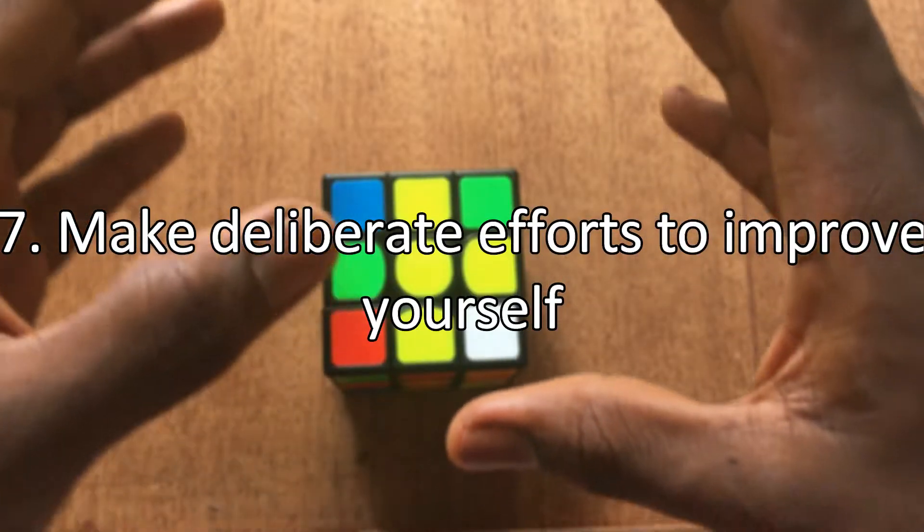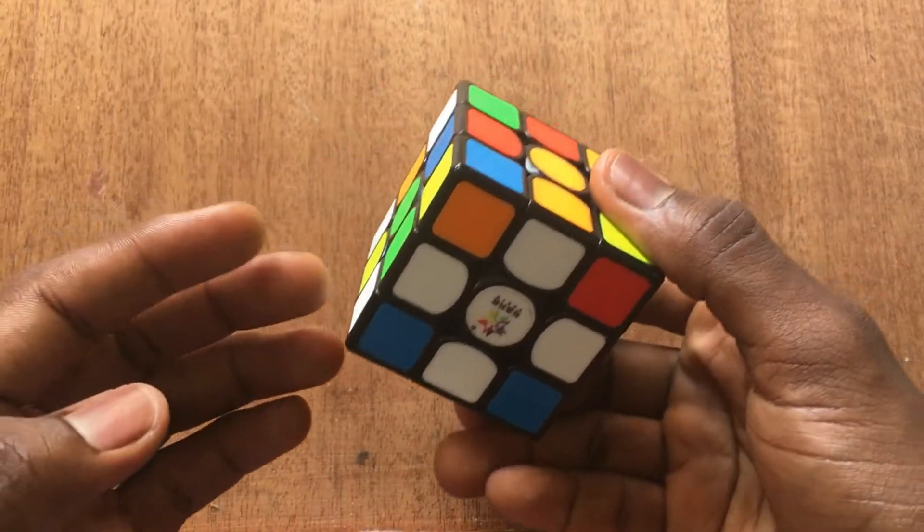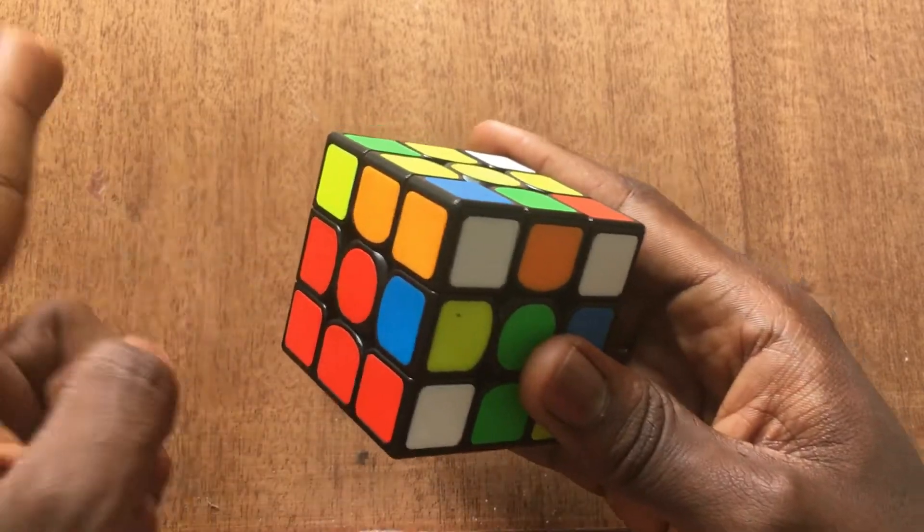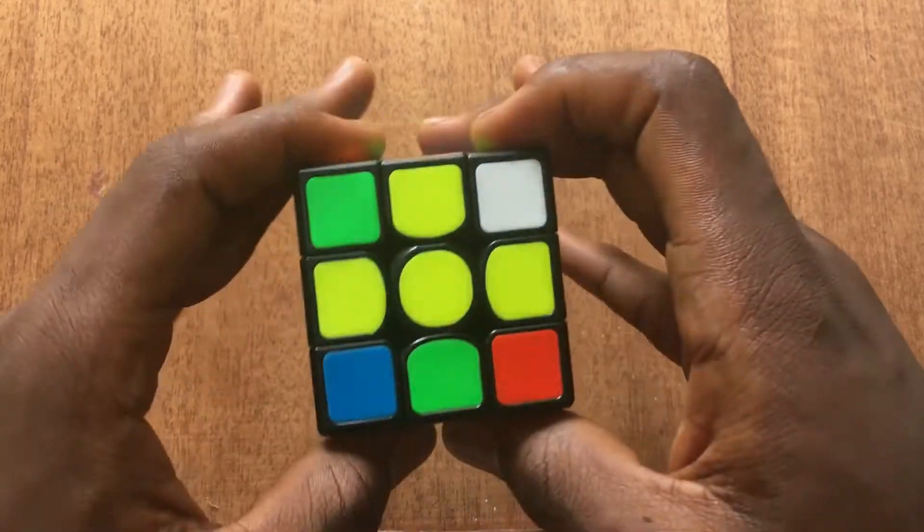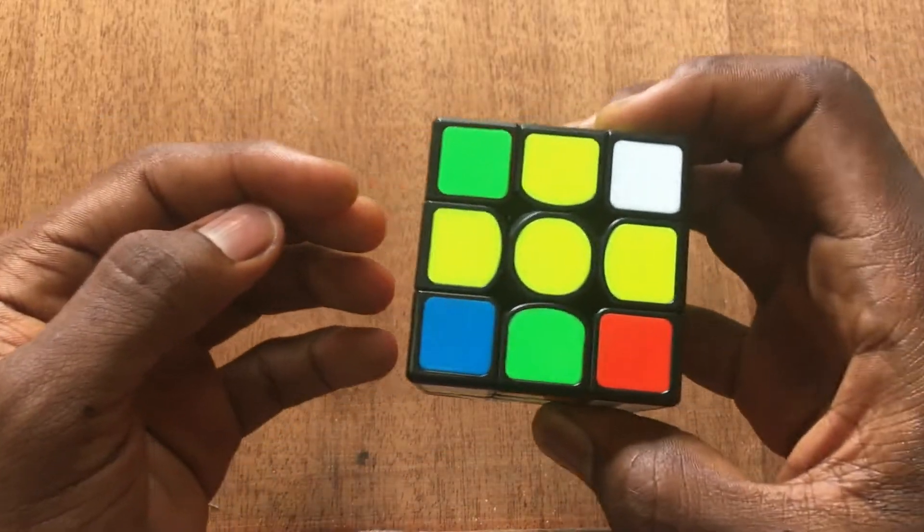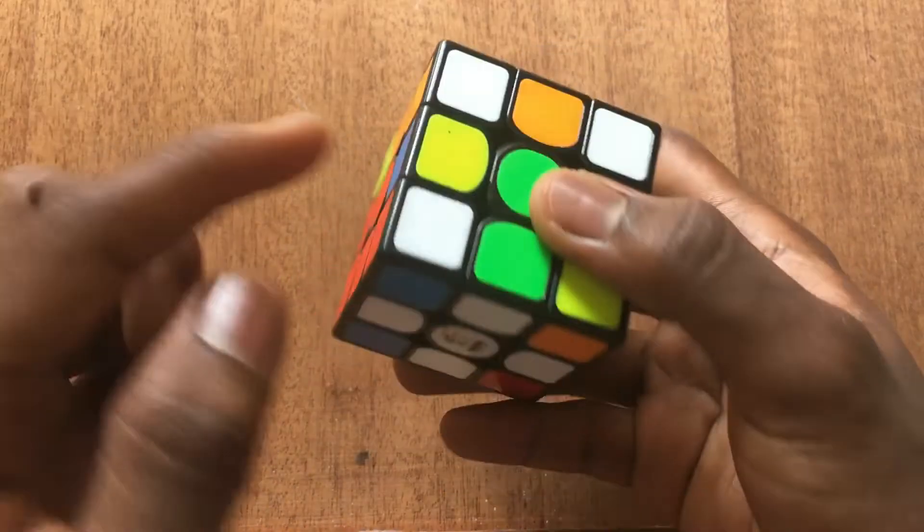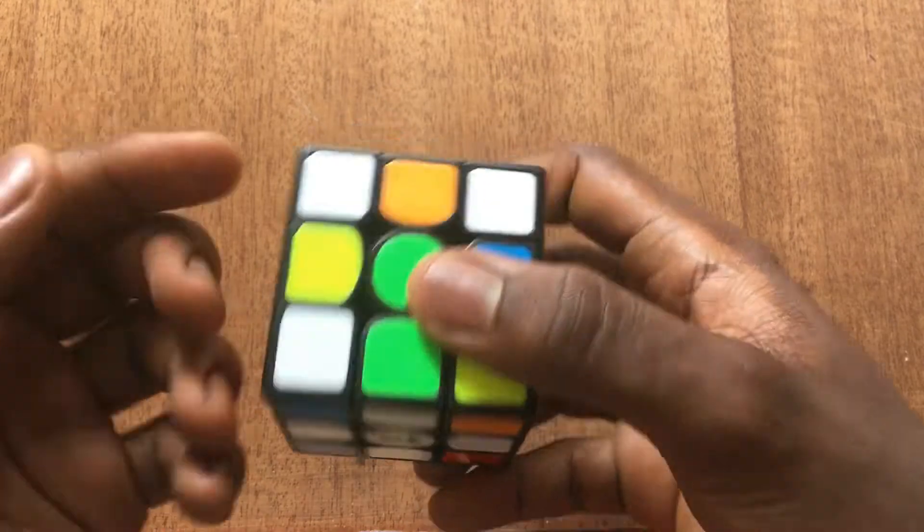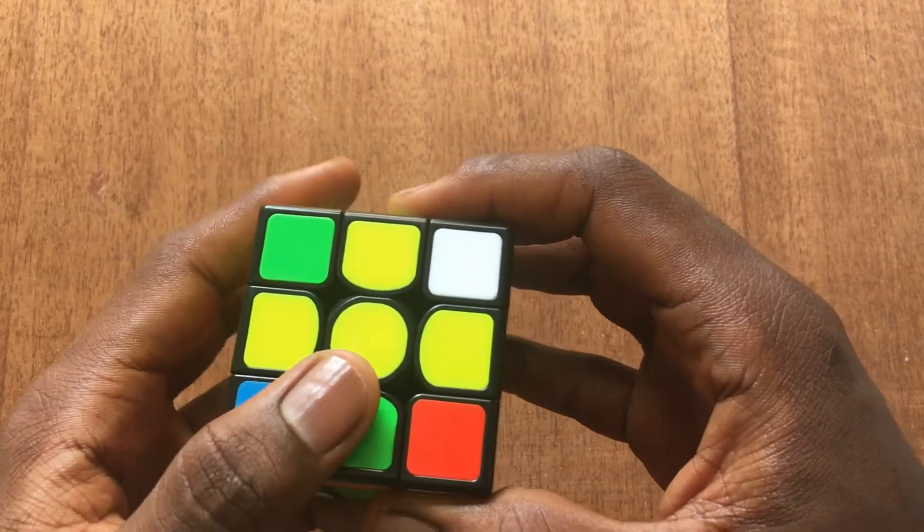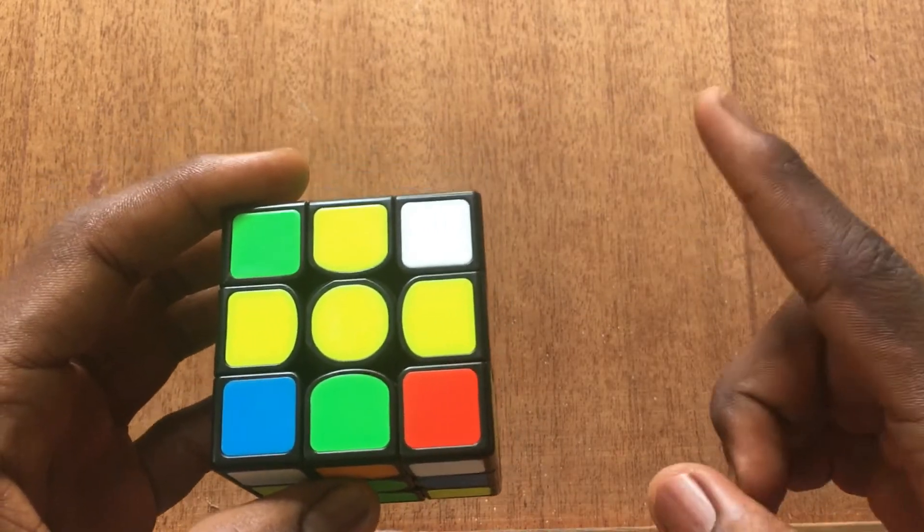Tip number 7: make deliberate efforts to improve yourself. Now this is the final and most important tip in this cross tutorial. If you want to be solving your cross in two seconds or less, you should always make sure you try to improve yourself. You can do this by just practicing over and over again. You can meet other cubers, exchange ideas with them, learn how they solve their cross. Also you can watch example solves from advanced cubers, learn how they deal with their cross pieces and you'll end up being better in the long run. And speaking of example cross solves, I have an example cross solves video here. So if you're interested, you can click on this and it will take you right to the video.